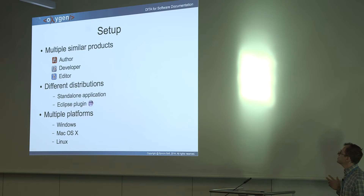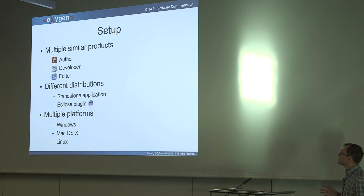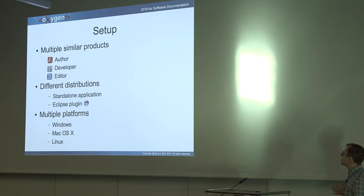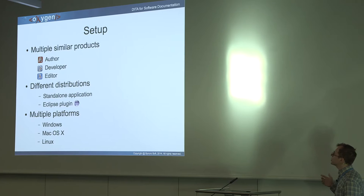We have about three main very similar products: XML Author, Developer, and Editor. These products have a lot of common functionality, but they also have separate distinct features. So we want to have a lot of reuse in our user's manual because most of the content gets published for all three. And for each of these products, as a separate complication, we have two different distributions — we distribute a product either as a standalone application or as a plugin for the Eclipse workbench. As a third complication, we have multiple platforms, so each product can run on Windows, Mac, or Linux.